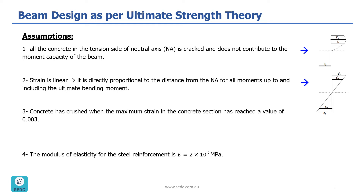In the ultimate strain theory or plastic analysis, we make a few assumptions. The first one is that all the concrete in the tension side of the neutral axis is cracked and does not contribute to the moment capacity of the beam. So we are basically saying all the concrete below the neutral axis does not exist.